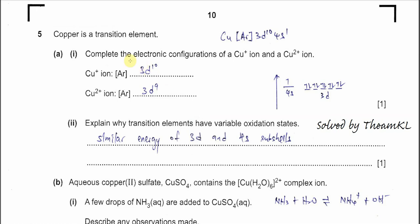Question 5A part 1: Complete the electronic configurations of the Cu⁺ and Cu²⁺ ions. Starting from copper's electronic configuration, which is [Ar] 3d¹⁰ 4s¹. For Cu⁺, the 4s electron is removed, giving [Ar] 3d¹⁰. Then for Cu²⁺, another electron is removed from 3d¹⁰, giving [Ar] 3d⁹. So the configurations are [Ar] 3d¹⁰ for Cu⁺ and [Ar] 3d⁹ for Cu²⁺.